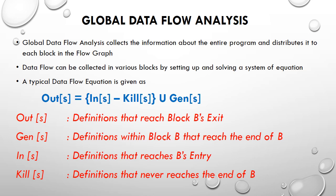The terms are defined as follows: out(s) is the set of definitions that reach block B's exit; gen(s) is the set of definitions within block B that reach the end of B; in(s) is the set of definitions that reach B's entry; kill(s) is the set of definitions that never reach the end of B. Let's take an example to understand these values clearly.